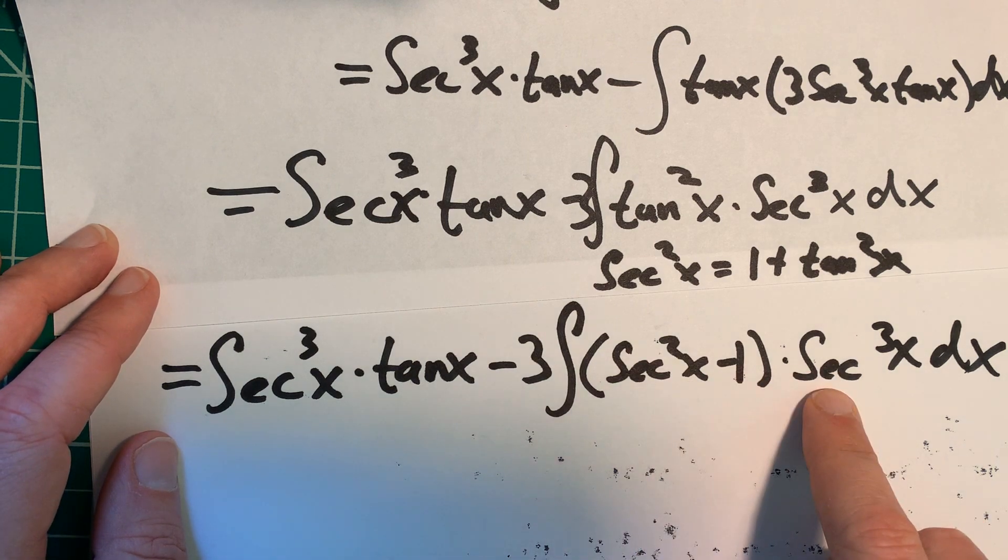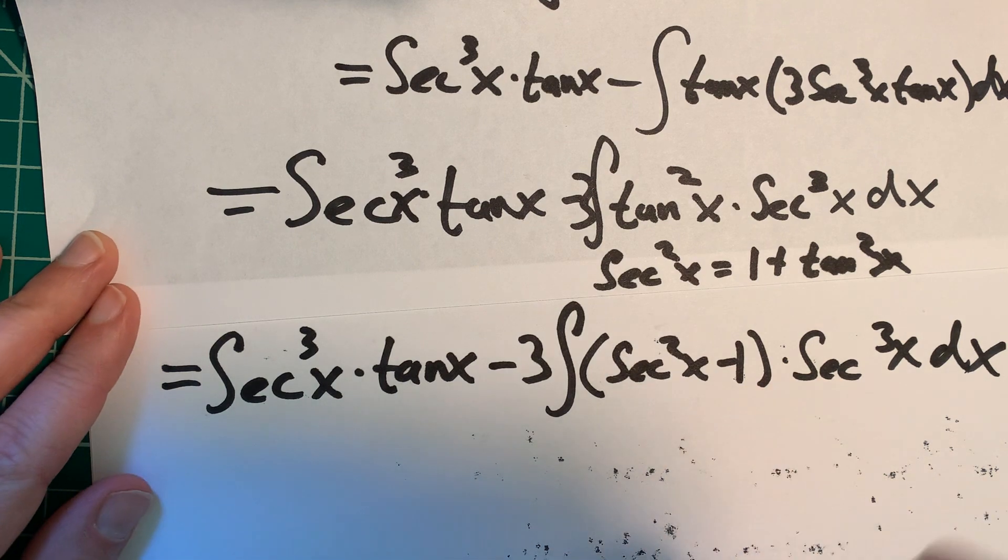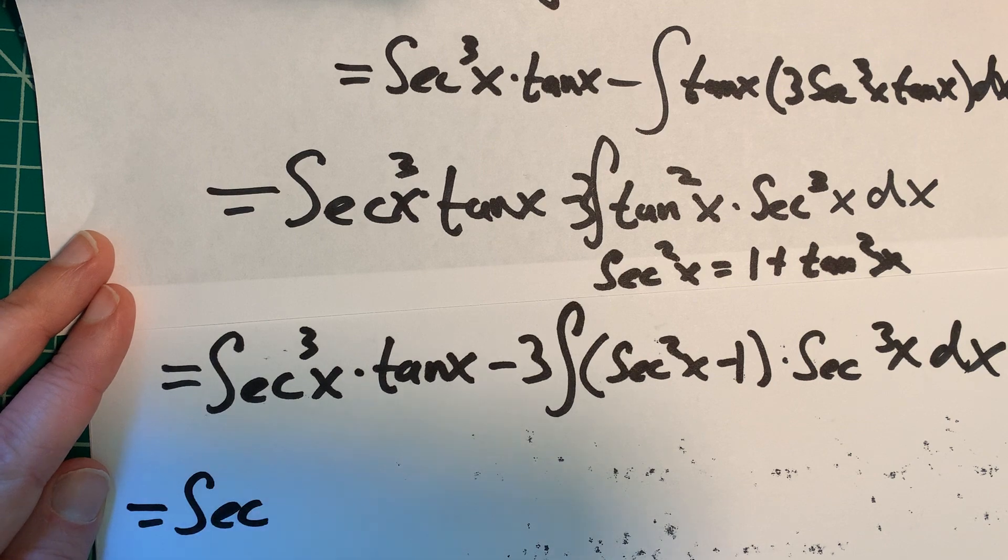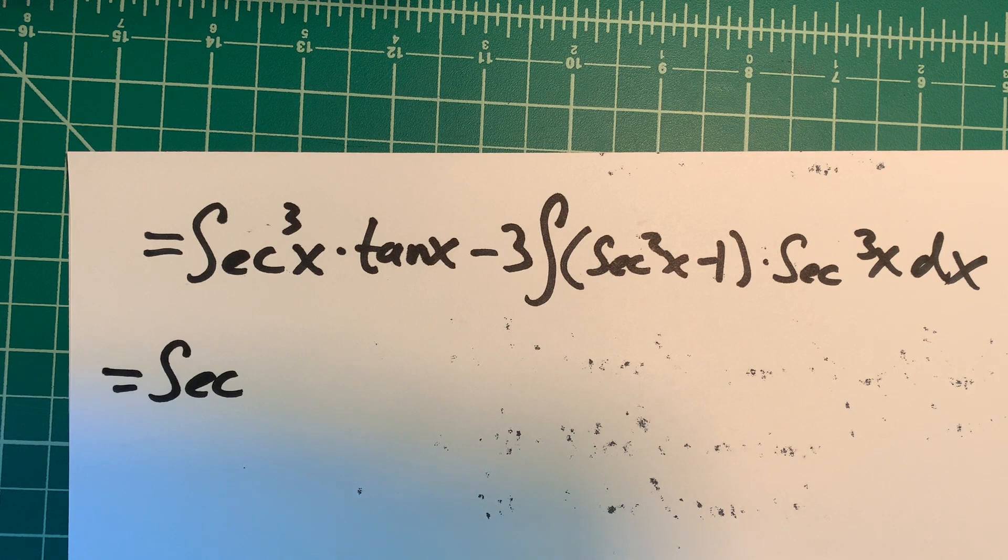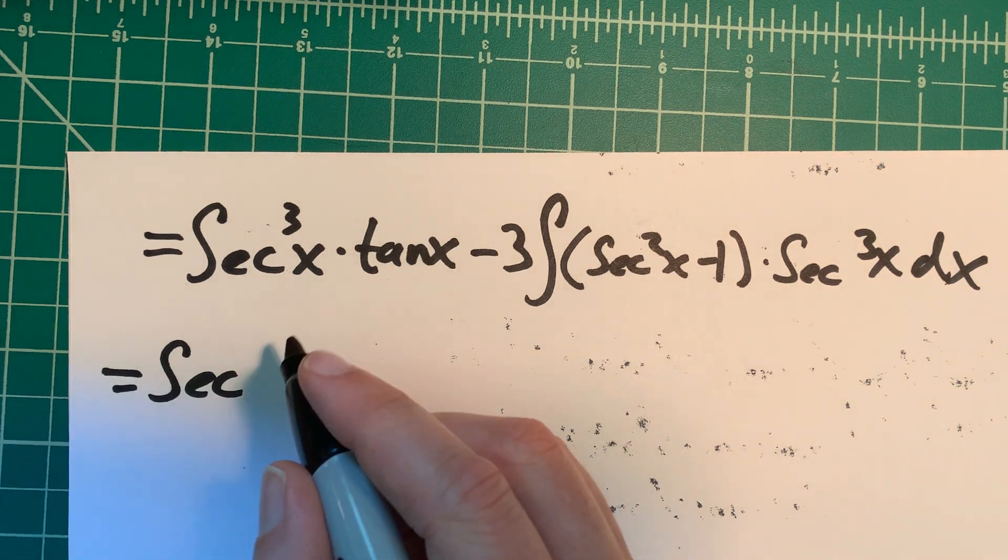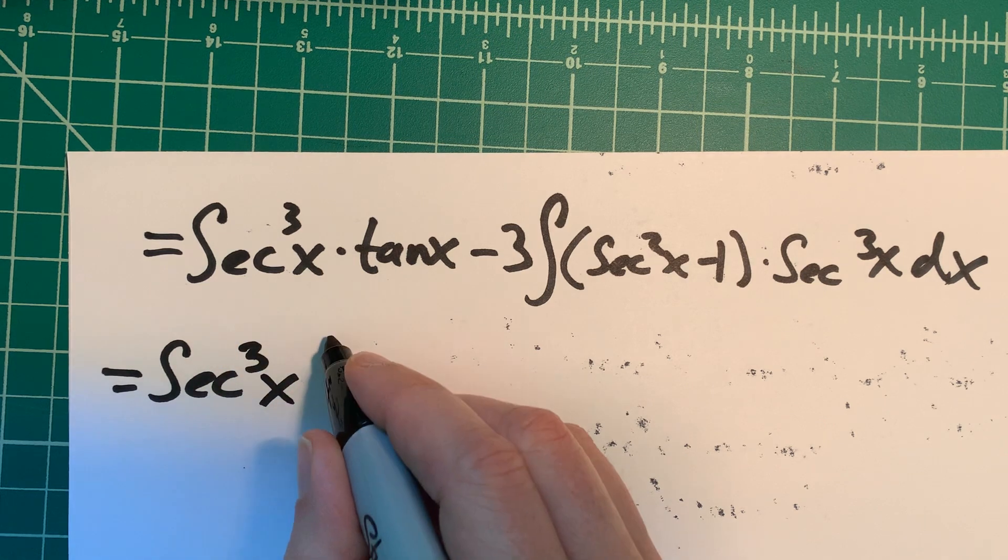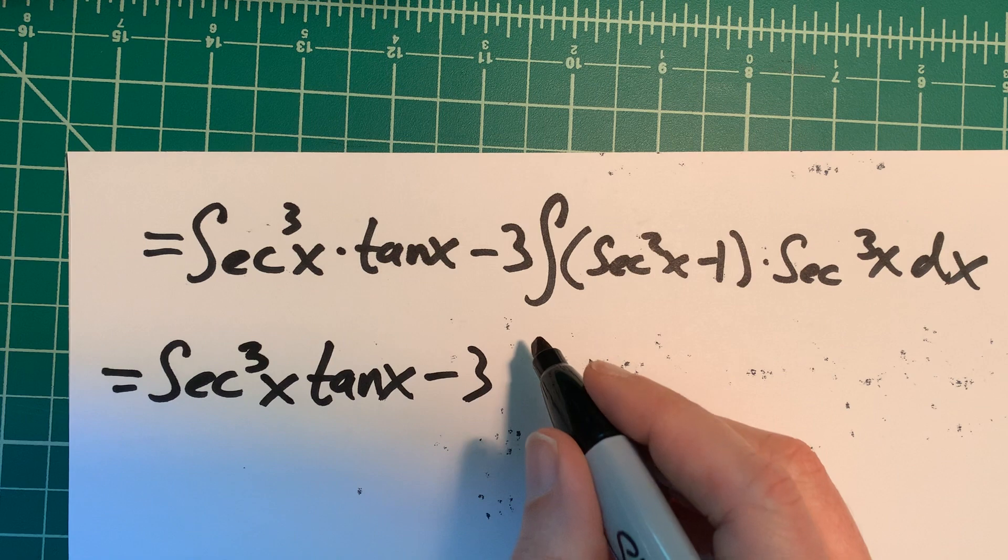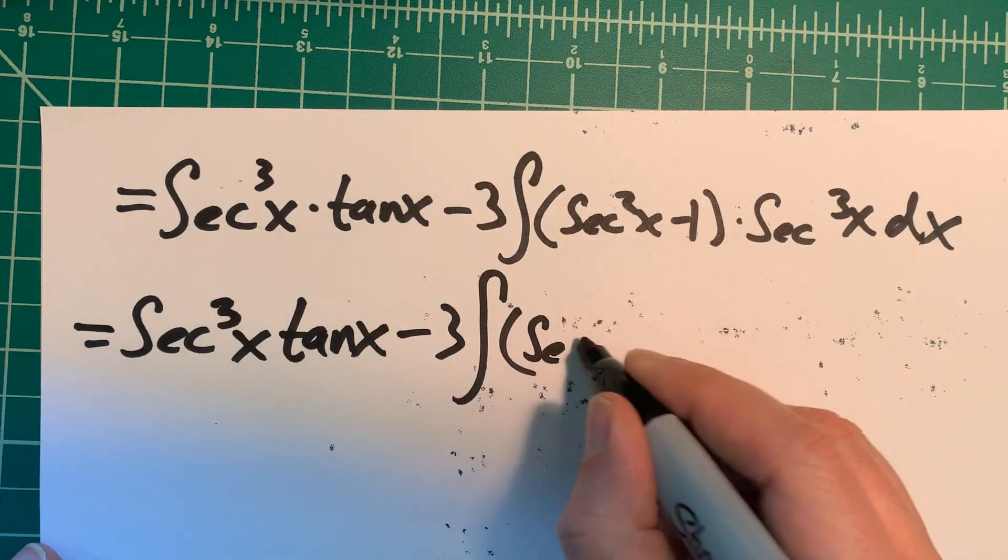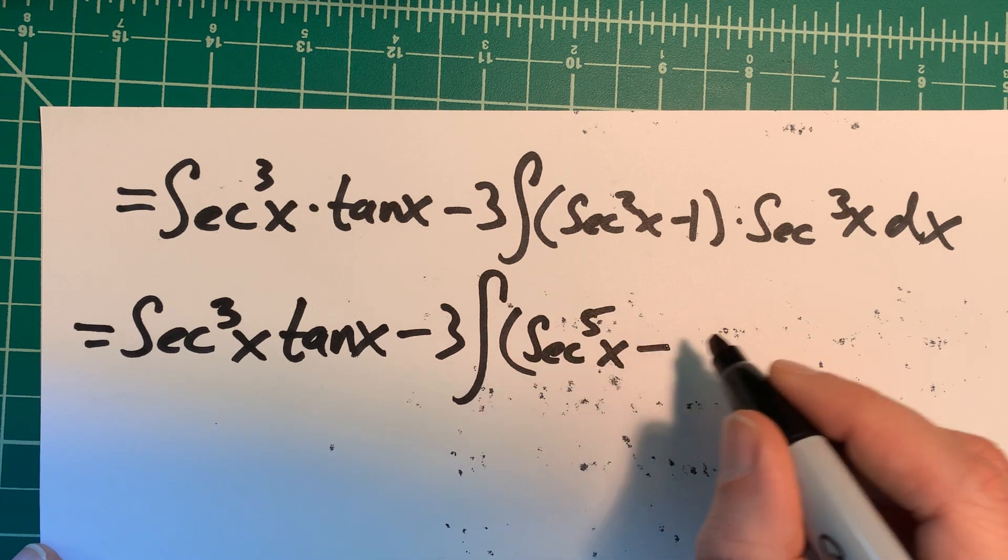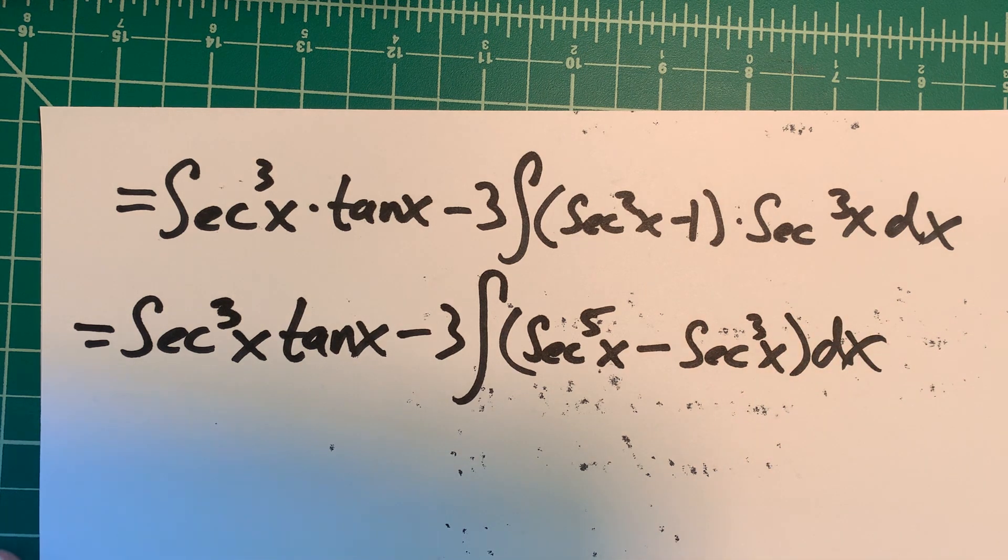So secant cubed x times tangent x minus 3 times the integral of secant squared x minus 1 times secant cubed x dx. So if I distribute this, this would become secant to the fifth and then we'd have a minus secant cubed. So we have secant cubed x tangent x minus 3, I've got to be careful with my parentheses, secant to the fifth x minus secant cubed x dx.